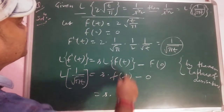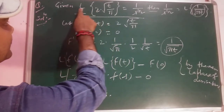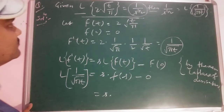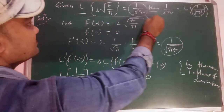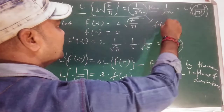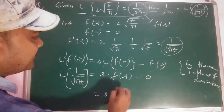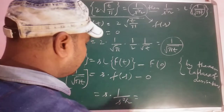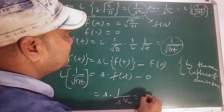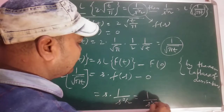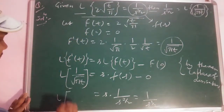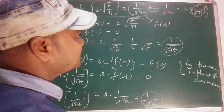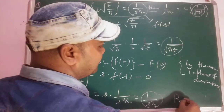So s·F(s) = s · (1/s^(3/2)) = 1/s^(1/2). Therefore L{1/√(πt)} = 1/s^(1/2), which is exactly what we needed to show. In such questions, we suppose the given term as f(t), find f(0), take the derivative, apply the Laplace of derivatives formula, and substitute the value of F(s).